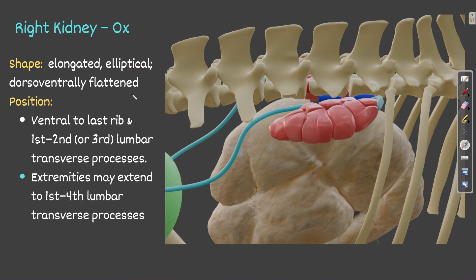The right kidney is elongated and elliptical, and dorso-ventrally flattened — the dorsal part is flattened and the ventral part is also flattened. Its position is ventral to the last rib and ventral to the transverse processes of the first to second, or sometimes third, lumbar vertebrae. The right kidney lies ventral to these transverse processes.